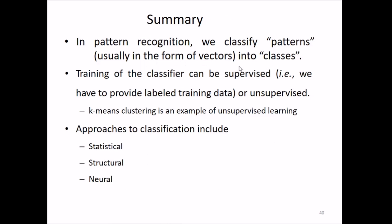To summarize, in pattern recognition we classify patterns, usually in the form of vectors, into classes. Training of the classifier can be supervised or unsupervised. K-means clustering is an example of unsupervised learning. We have various approaches to classification including statistical, structural, and neural methods. Hope you got an idea about pattern recognition. Thank you so much, take care.